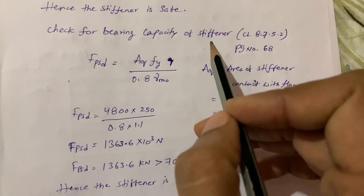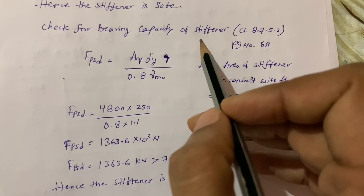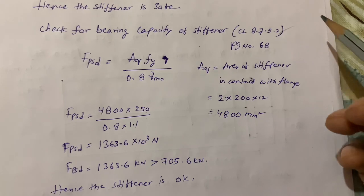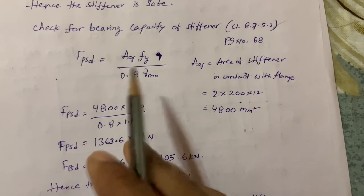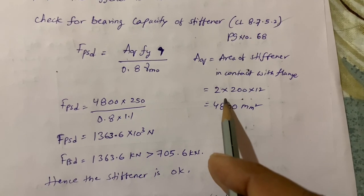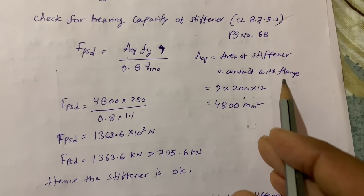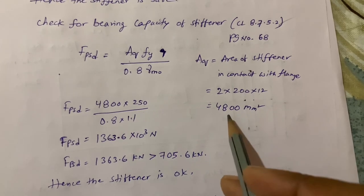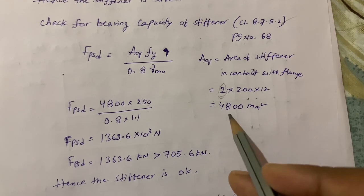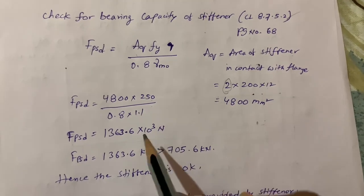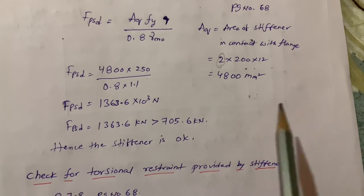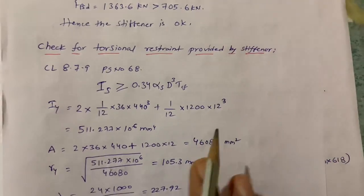For the bearing capacity check of the stiffener (clause 8.7.5.2, page 68), the area in contact with the flange Aq = 2 × 200 × 12 = 4800 mm² (two stiffener plates in contact with flange). Substituting into the bearing capacity formula gives a value greater than the applied shear force. Hence the stiffener bearing capacity is adequate.